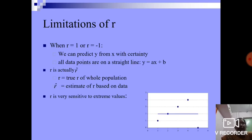Limitations of r. When r equals 1 or r equals minus 1, we can predict y from x with certainty. All data points are on a straight line, y equals Ax plus B. ρ is actually r of whole population. r̂ is the estimate of r based on data. r is very sensitive to extreme values.